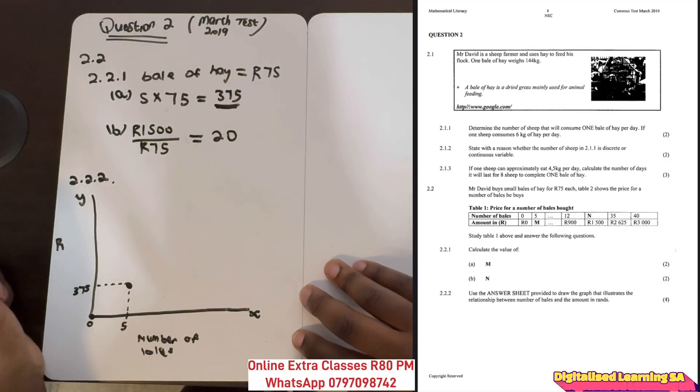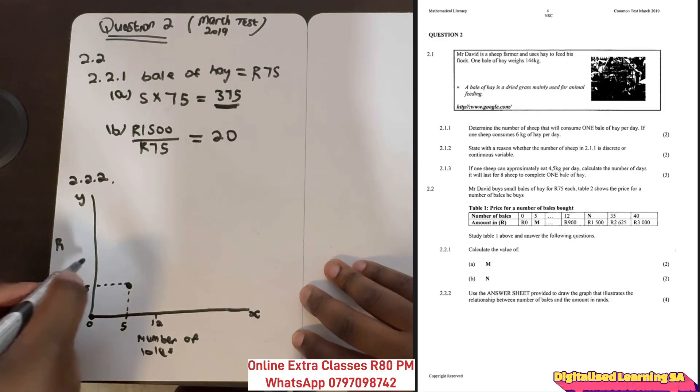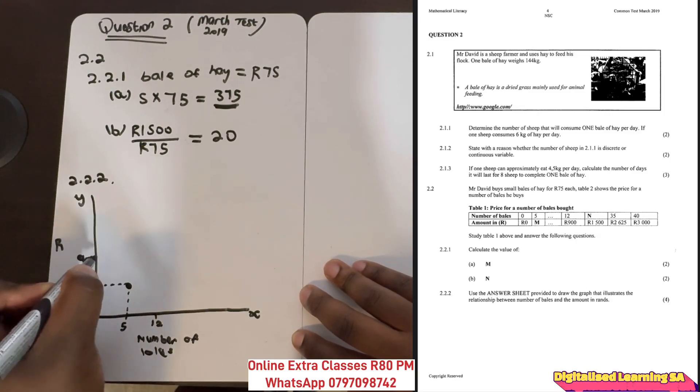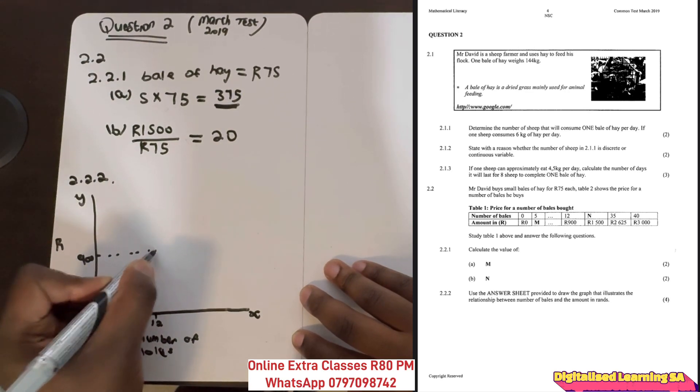The third data point has 12 bales which costs 900, so we'll have another point here.